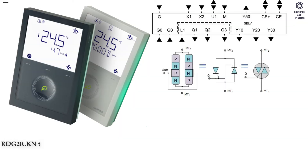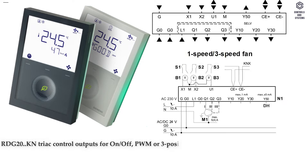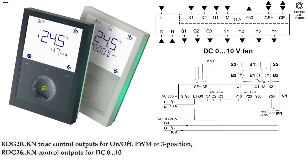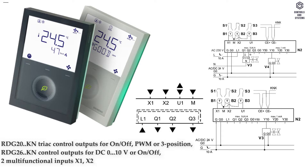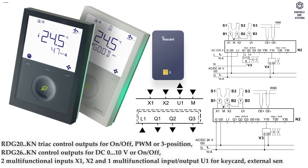The RDG20K in has TRIAC Control Outputs for ON, OFF, PWM, or 3-Position Control. The RDG26K in has Control Outputs for DC 0 to 10 Volt or ON/OFF. There are 2 Multifunctional Inputs X1 and X2, and 1 Multifunctional Input/Output U1 for Keycard, External Sensor, etc.